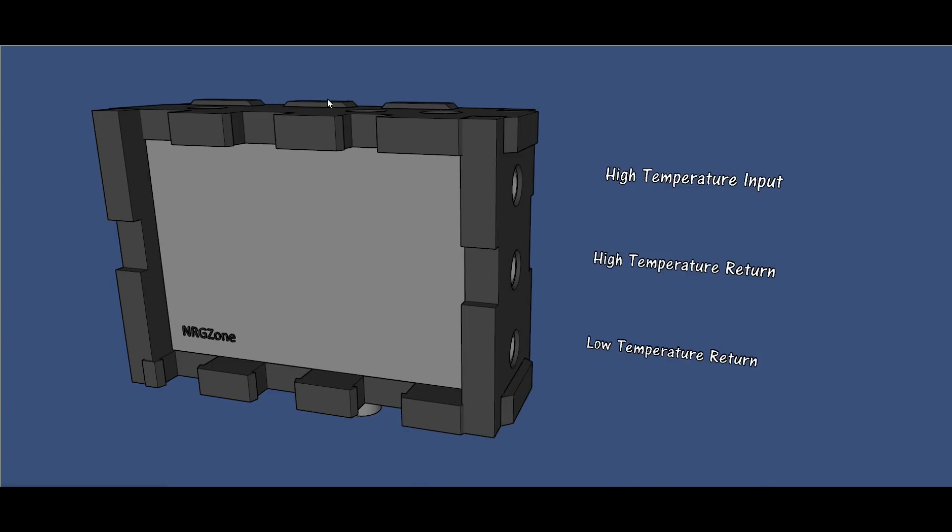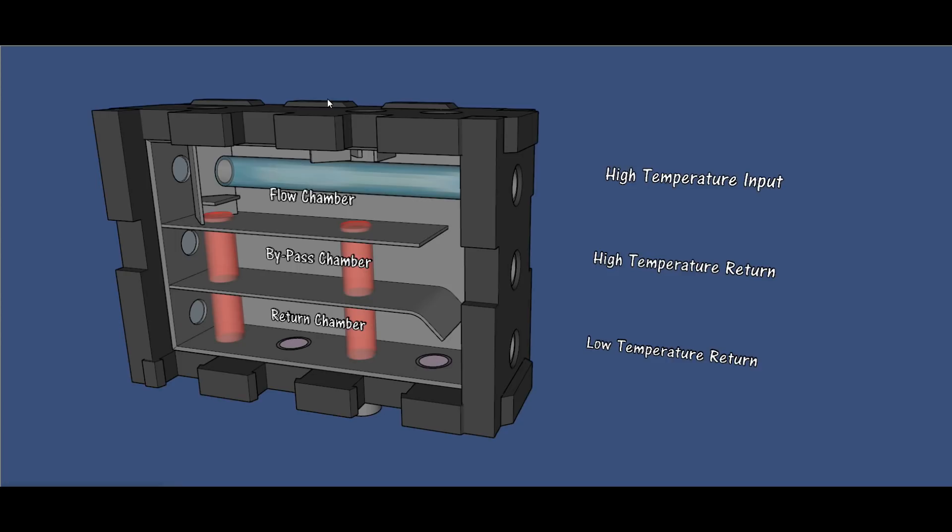Inside that manifold you have three areas. The top area is where you would introduce any heat from any form of heat source - high temperature, low temperature, whatever. In the middle you have a bypass chamber.